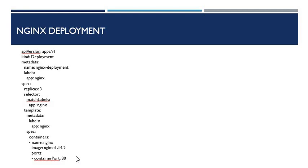The replica set will create 3 pods — basically the 3 pods of your application, your service will be created. In the template field, we have given the label app Nginx. That will basically label the pods as Nginx.